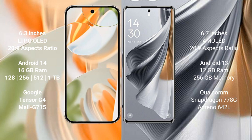The Google Pixel 9 Pro runs on Android 14, while the Oppo Reno 10 Pro runs on Android 13. The Google Pixel 9 Pro comes with 16GB RAM and 256GB, 512GB, or 1TB internal storage options, powered by the Tensor G4 processor with Mali-715 GPU.